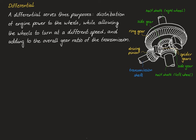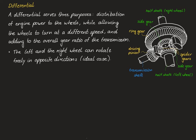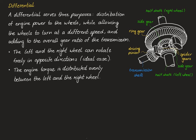The differential also allows a difference in rotation speed between the right and left half shafts. On top of the synchronous rotation mode, there is an additional mode where the two half shafts rotate against each other: if the left half shaft rotates one way, the spider gears rotate around their axis accordingly and the right half shaft rotates the opposite way. Hence the left and right wheels can rotate freely in opposite directions in the ideal case, and as a consequence the differential distributes engine torque evenly between both wheels independent of their rotation speed.